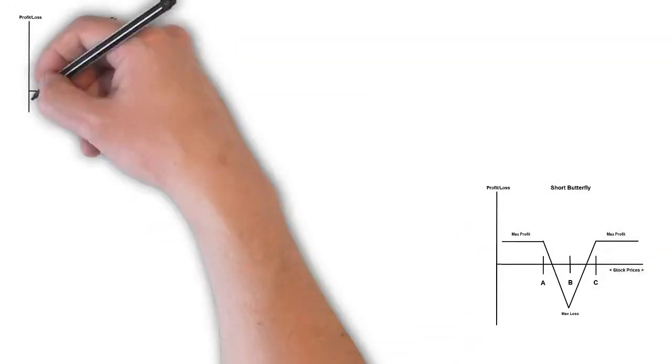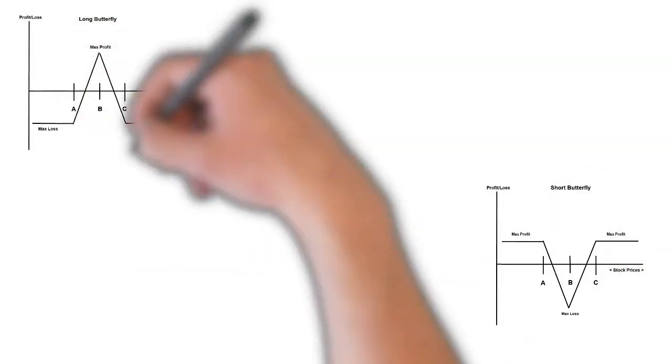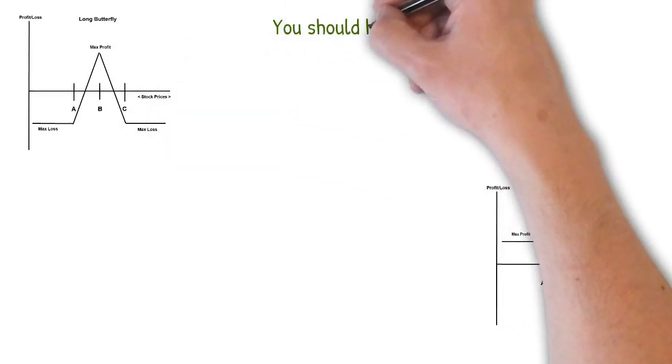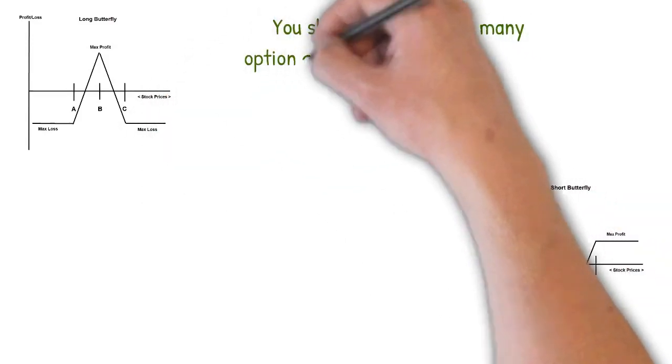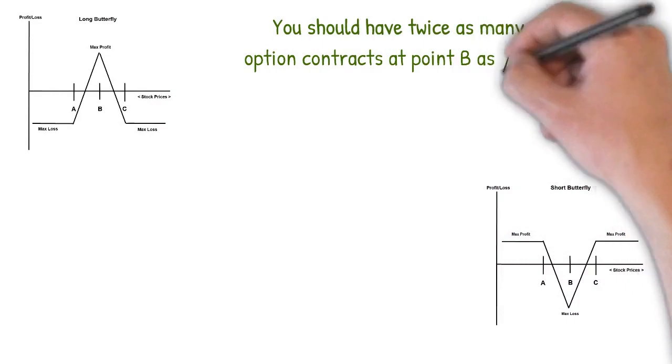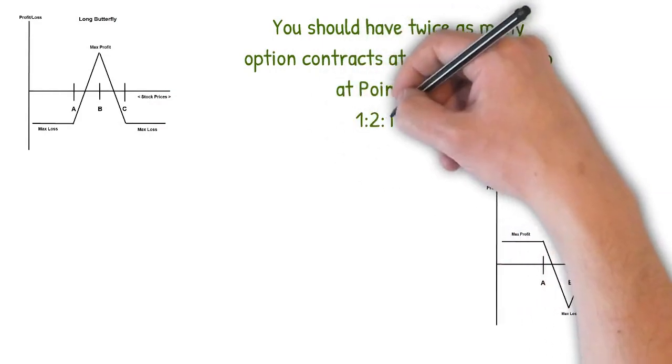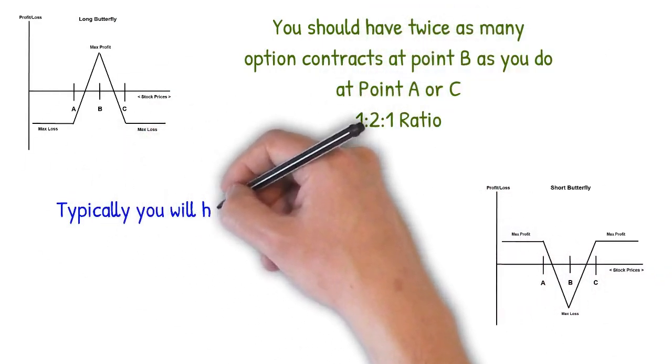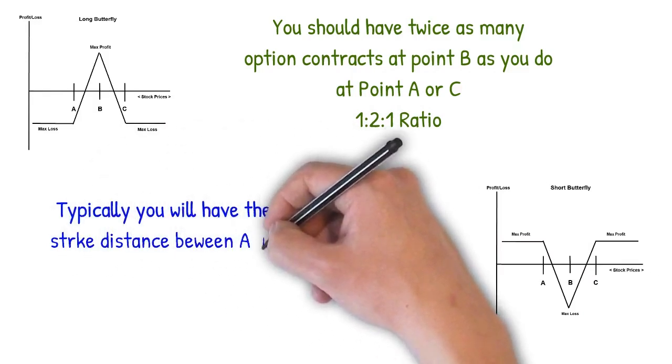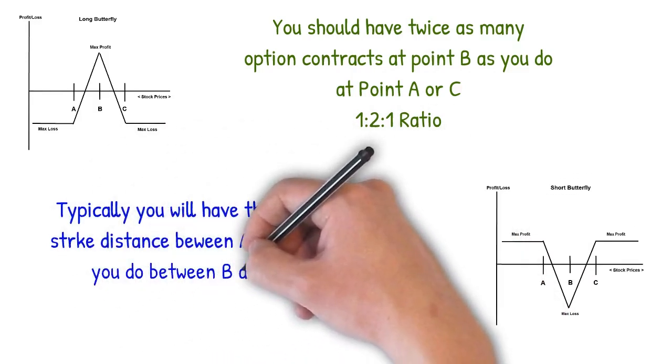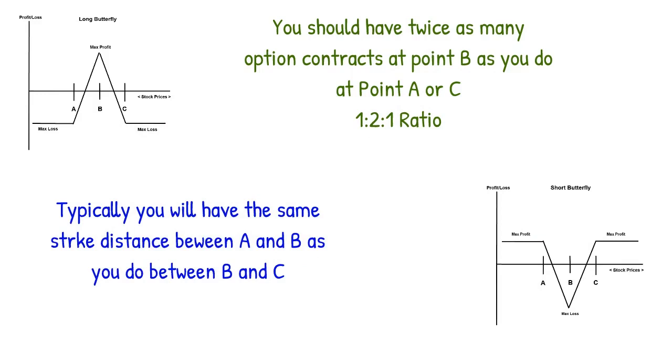To build your butterfly, you should have twice as many option contracts at point B as you do at either point A or point C. Think of a 1 to 2 to 1 ratio or a 2 to 4 to 2 ratio or a 4 to 8 to 4 ratio. You should also have the same strike distance between point A and B as you do between point B and C for a proper butterfly.